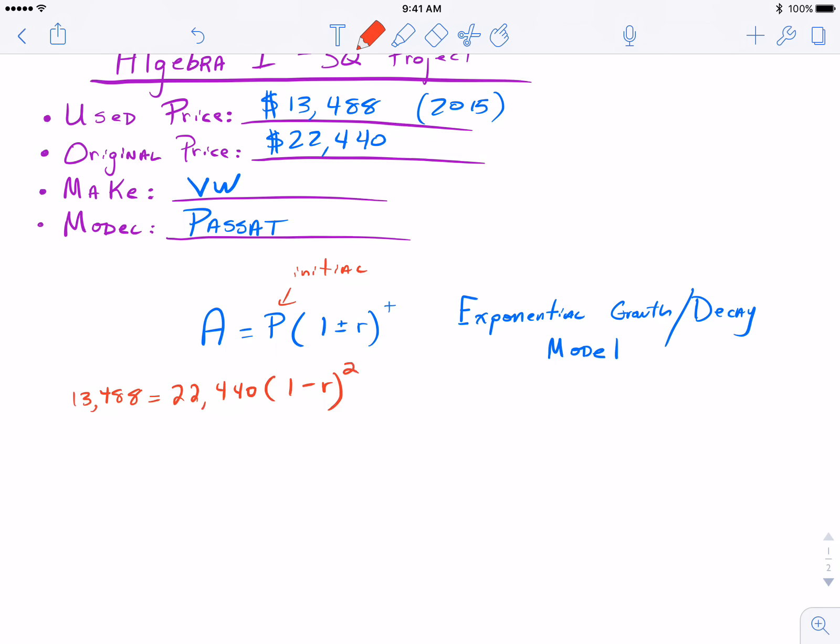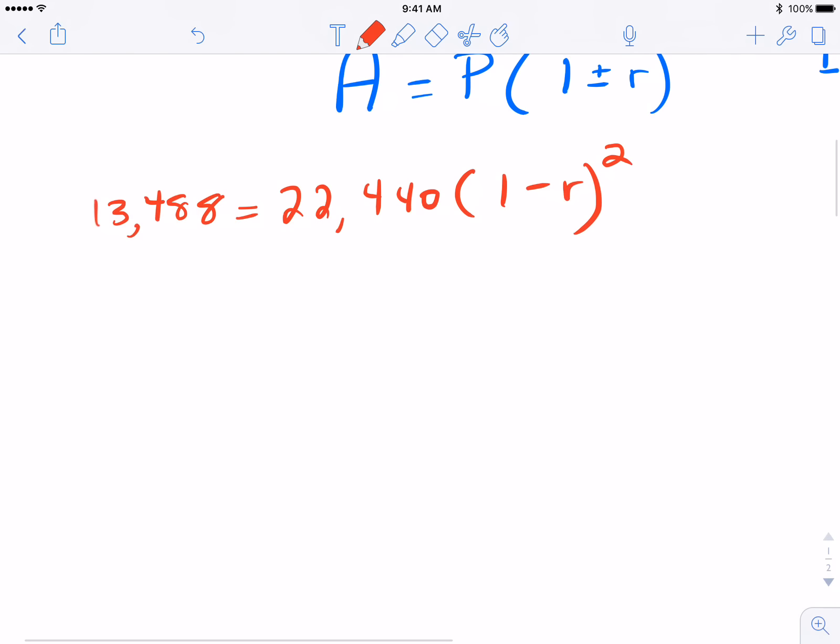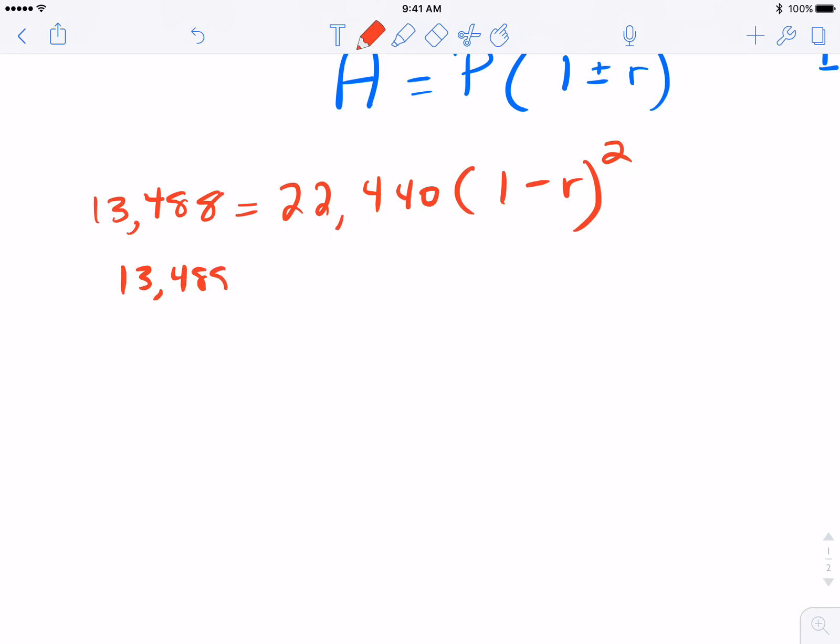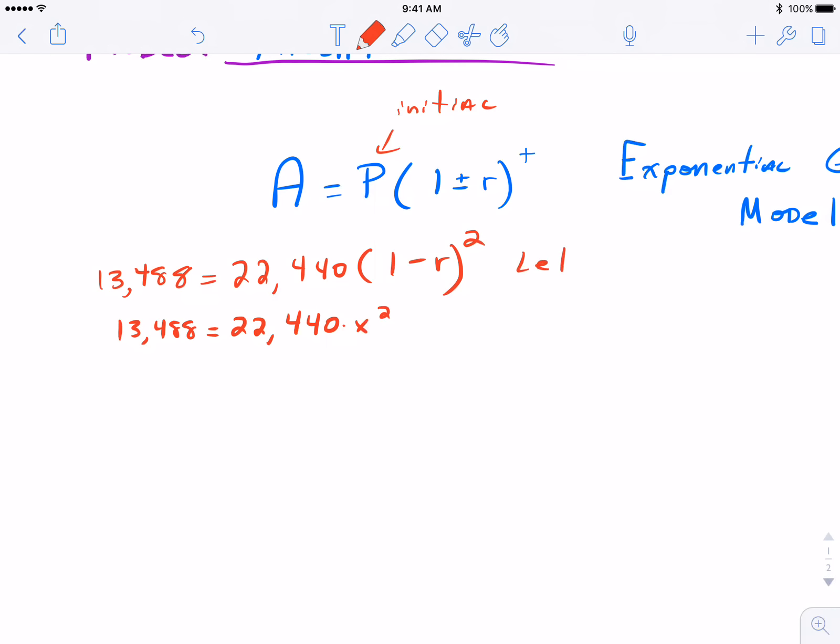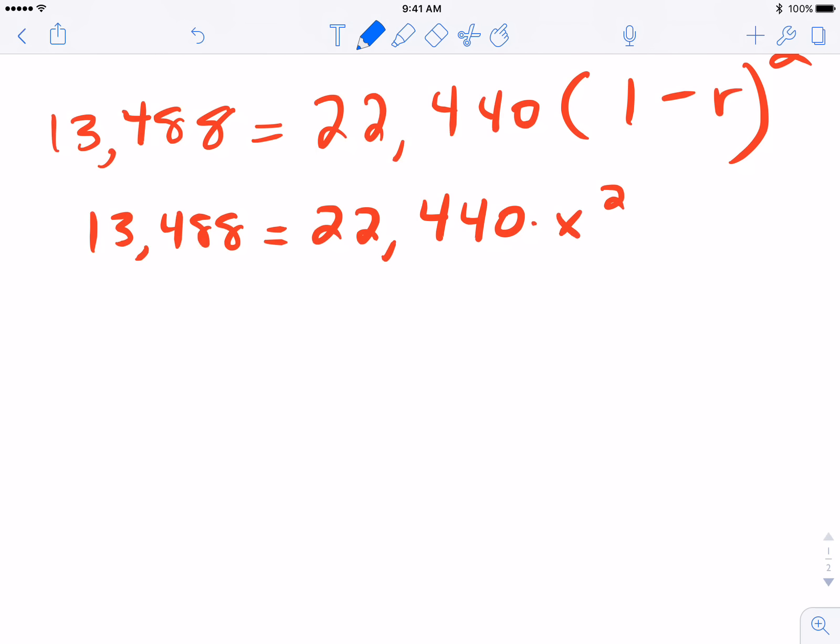So the first thing that we're going to do, it can be a little confusing with that 1 minus r, so I'm going to relabel that simply as X. In other words I'm saying let's take this expression 1 minus r and we'll just instead use X to represent that. It's going to make it a little bit easier for us to start working around a few things and once we figure out what X is we can just adjust it to more specifically find what r is.